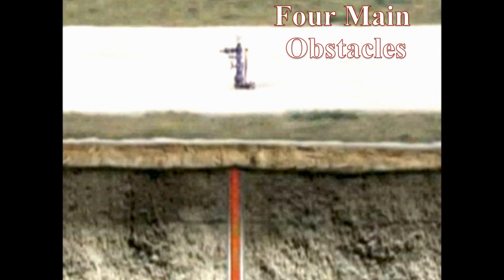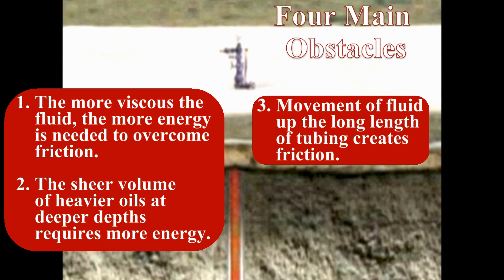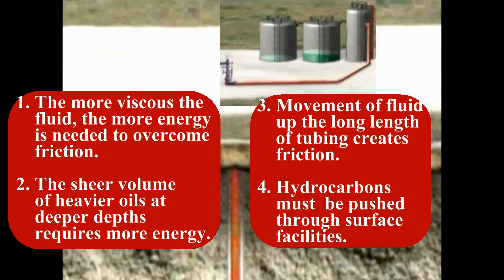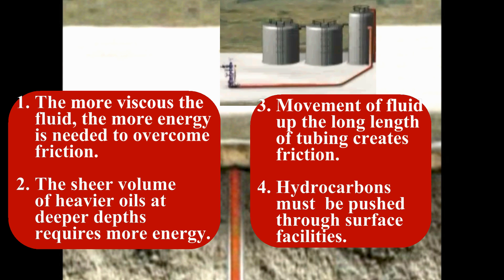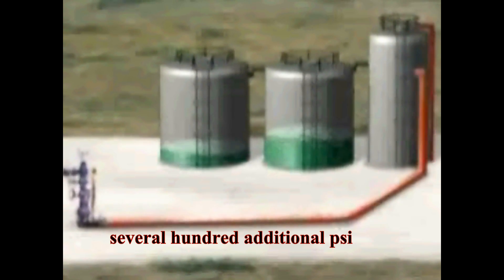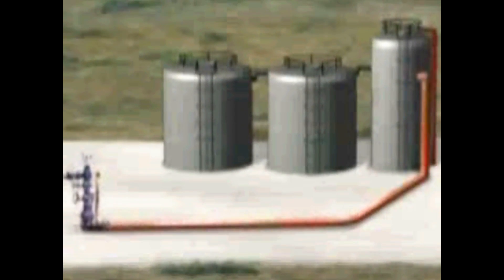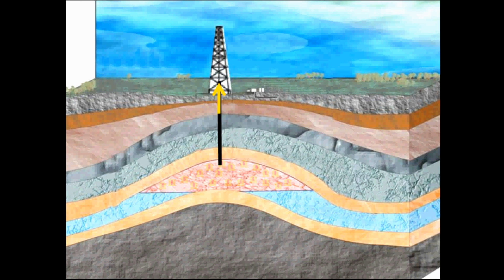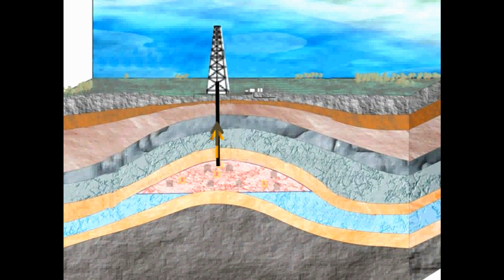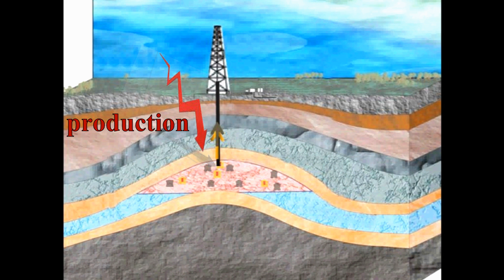Finally, the fourth obstacle is encountered at the surface. Having already been pushed up through the tubing, the hydrocarbons must now be pushed into and through the surface facilities that separate and clean them in preparation for transport. This can require several hundred additional PSI. When natural lift starts to falter or give out, it can no longer be relied on to get the trapped hydrocarbons to the surface and through the surface facilities, and the well's production begins to fall and then stops.